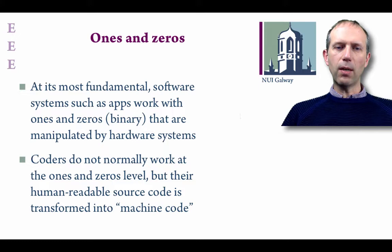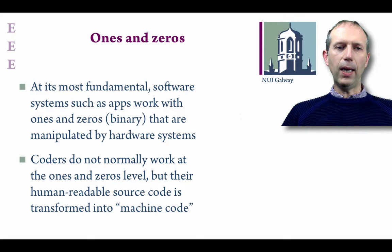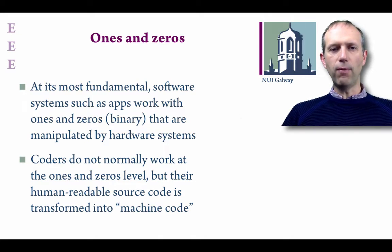We talked two videos ago about the fundamental type of information that makes up all of our digital communications — that being ones and zeros. Similarly, software systems such as apps are programmed using some kind of computer language, which is then composed of or decomposed into a language that the machine can work with — ultimately in the form of ones and zeros — that are then manipulated by hardware systems which include processors that involve transistors switching on and off ones and zeros.